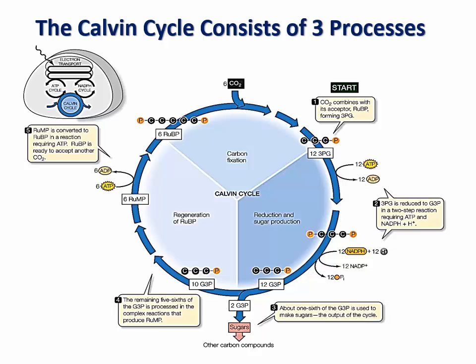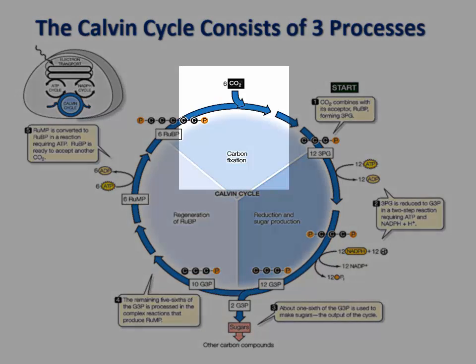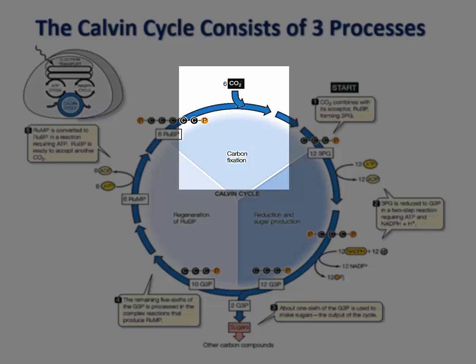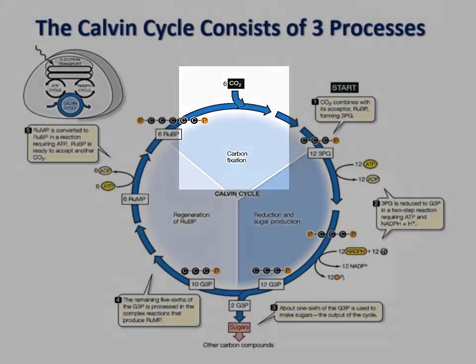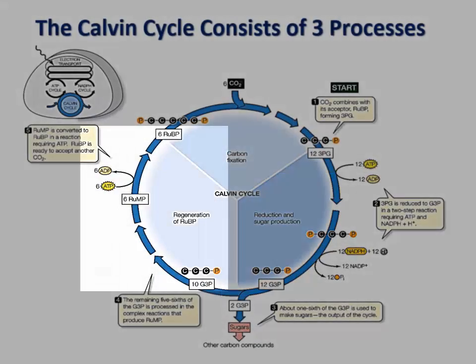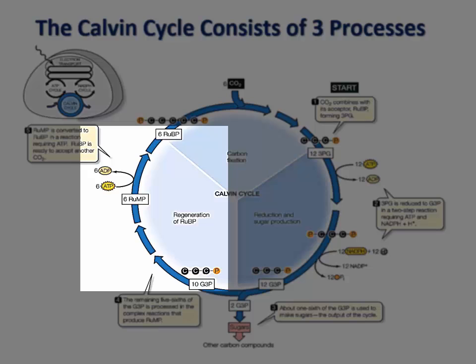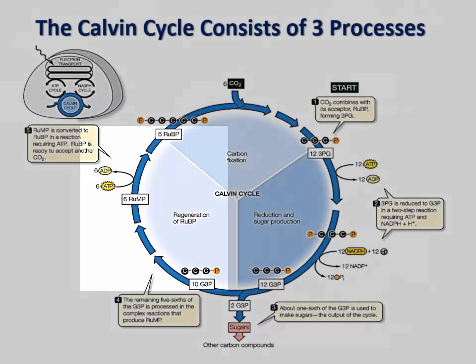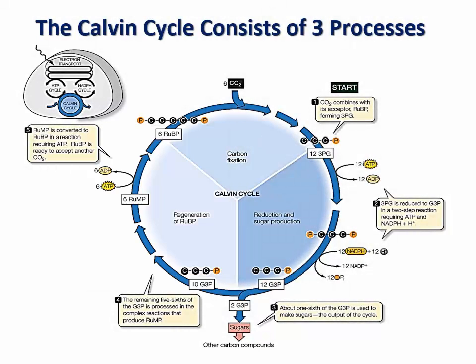The Calvin cycle can be divided into three processes. The first one is carbon fixation. The second is carbon reduction. And the third one is the regeneration of the carbon dioxide acceptor known as ribulose bisphosphate, or RuBP.